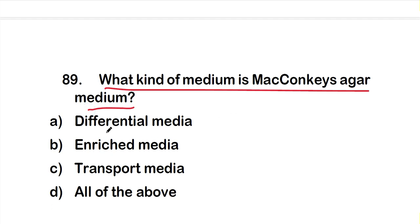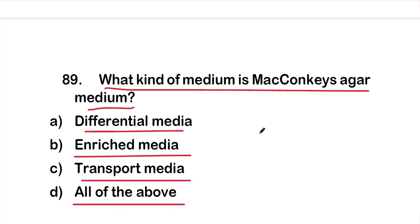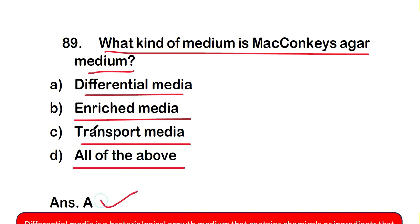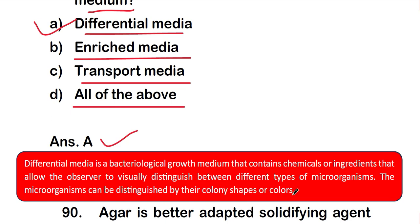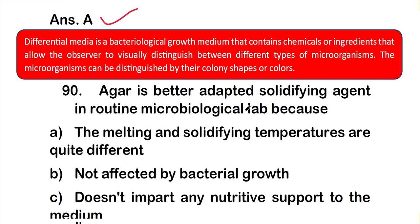Question number 89: What kind of medium is MacConkey's agar? Option A: differential media, option B: enriched media, option C: transport media, option D: all of the above. The right answer is option A — differential media. Differential media is a bacteriological growth medium that contains ingredients allowing the observer to visually distinguish between different types of microorganisms by their colony shape or color.